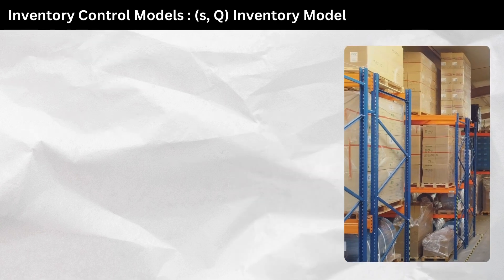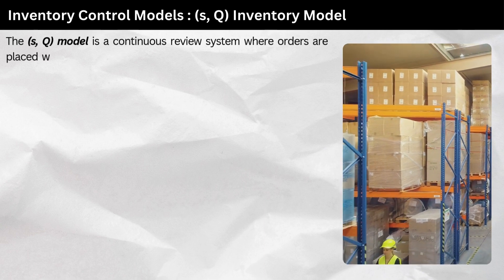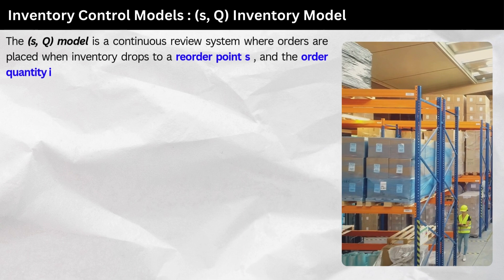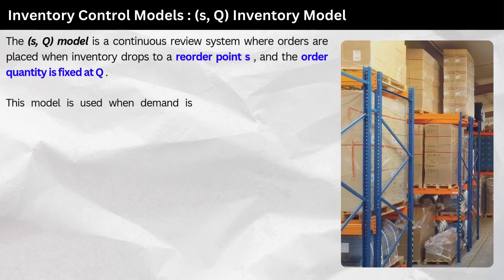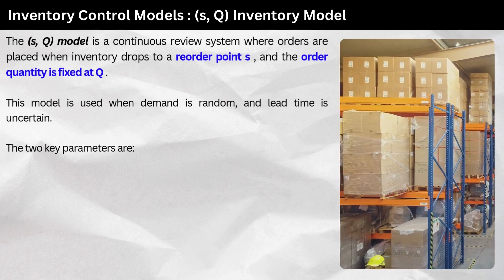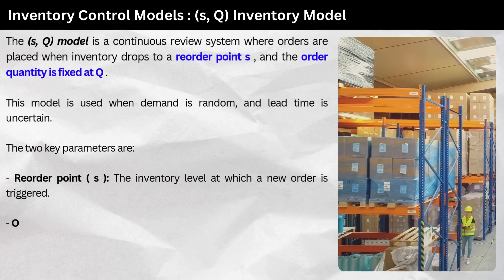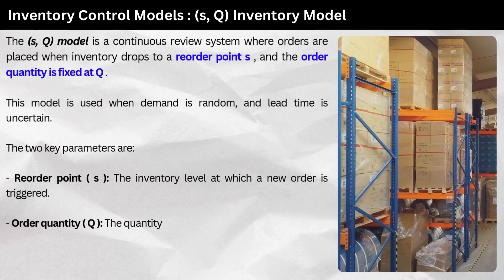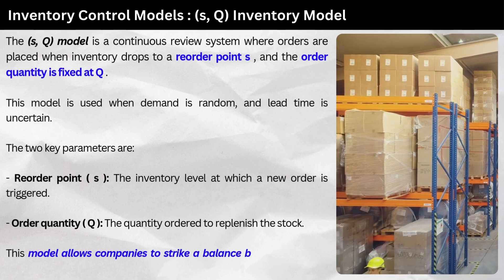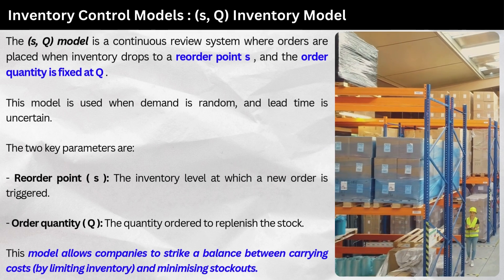3. S,Q Inventory model. The S,Q model is a continuous review system where orders are placed when inventory drops to a reorder point S, and the order quantity is fixed at Q. This model is used when demand is random and lead time is uncertain. The two key parameters are: Reorder point S — the inventory level at which a new order is triggered, and Order quantity Q — the quantity ordered to replenish the stock. This model allows companies to strike a balance between carrying costs by limiting inventory and minimizing stockouts.